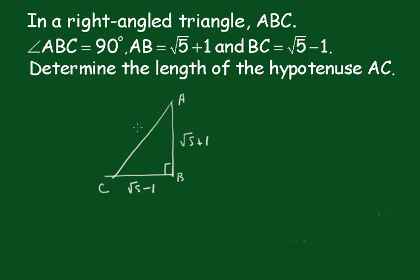And we want to find the length of this hypotenuse. We'll call that H. Now from Pythagoras Theorem, we know that H squared will be equal to the square root of 5 plus 1 all squared, plus the square root of root 5 minus 1 all squared.